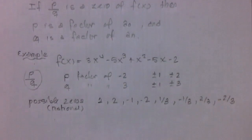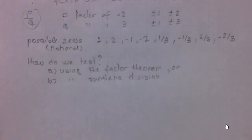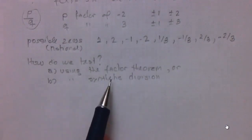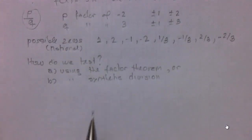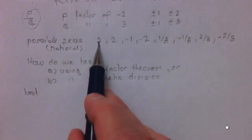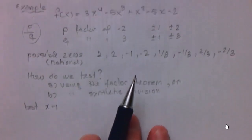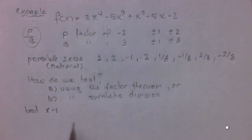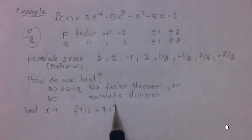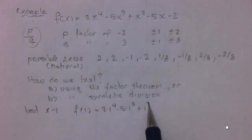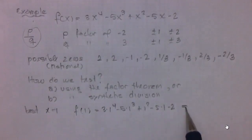It's a little tedious, but you have to start testing each one of them. Let's test x equals 1 first. If x equals 1 is a zero, then f(1) must equal zero. Computing 3 times 1 to the fourth minus 5 times 1 cubed plus 1 squared minus 5 times 1 minus 2 — if you check that out, it is not zero. So x equals 1 is not a zero of this polynomial.